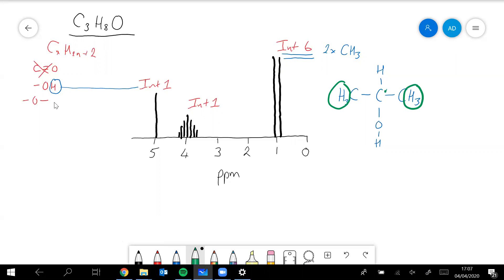So n plus one rule, that means that these green hydrogens should give you a doublet, and that's what we've got here. We have got a doublet there, so that's almost certainly what is causing that peak there.